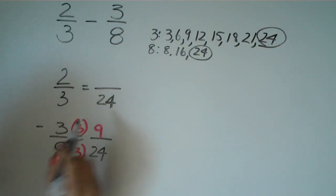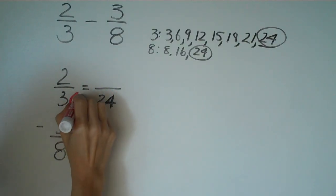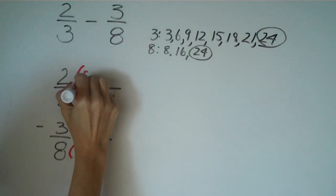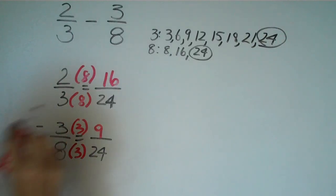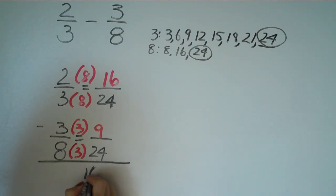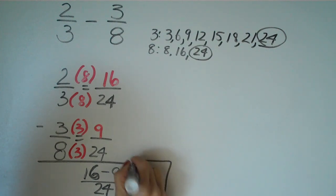And then on the top, we have 2 over 3. And to go from 3 to 24, we had to multiply by 8. And we do that on top and bottom. And we get 2 times 8 is equal to 16. So now we have 16 minus 9 all over 24. And 16 minus 9 is 7 over 24. And that's our final answer there.